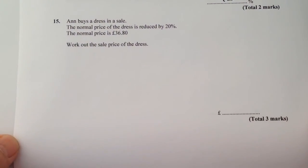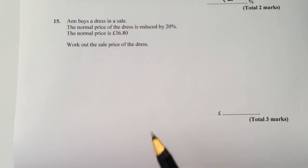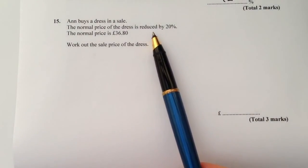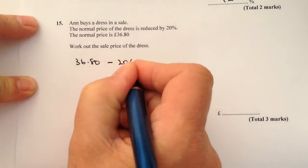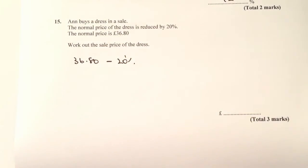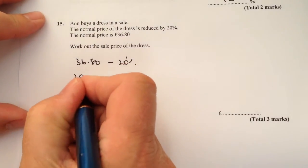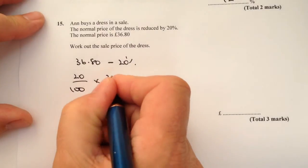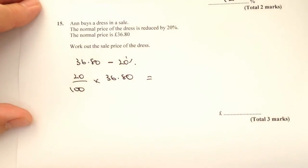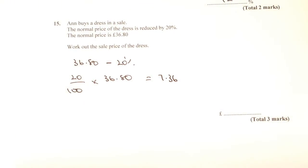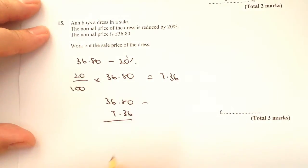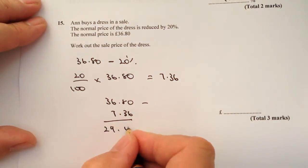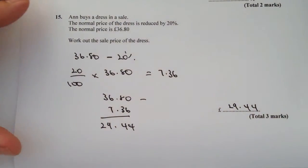The next question has a bit more wording — there's a reduction of 20%. What they're saying is, what is £36.80 minus 20%? To do that, we need to find out what 20% of £36.80 is. Plug that into your calculator: 20% of £36.80 equals £7.36. So the sale price of the dress is £36.80 minus £7.36, which gives £29.44.